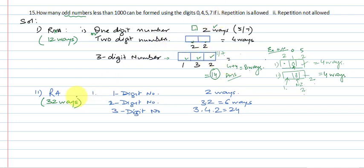The second part is repetition allowed. One-digit number can be filled in two ways. Two-digit number: this place can be filled in three ways, zero not. Three-digit number again...